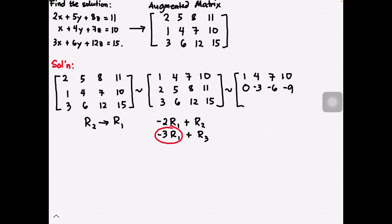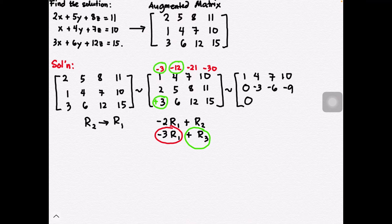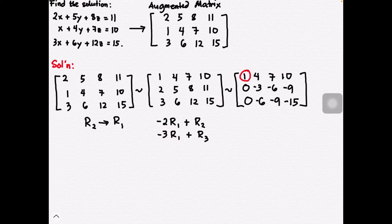For the new entries in the third row, we apply a multiplier of negative three to the first row. Adding those products to the corresponding entries of the third row, we now have the updated third row. With one as the pivot point, it is easy to make those entries zero.